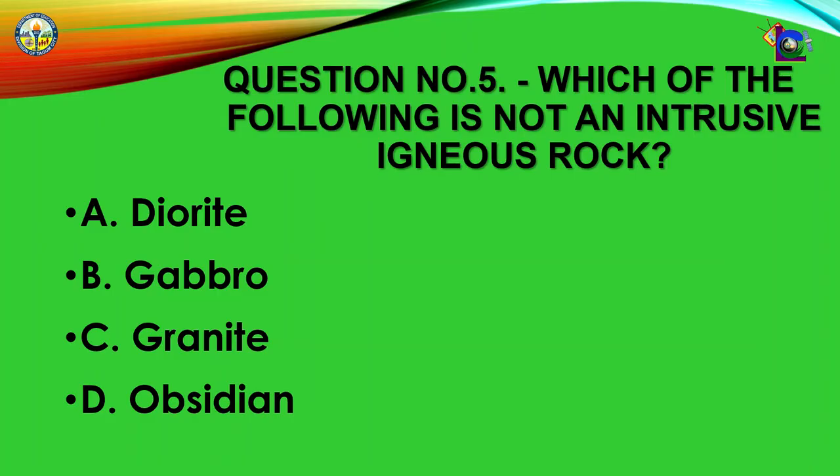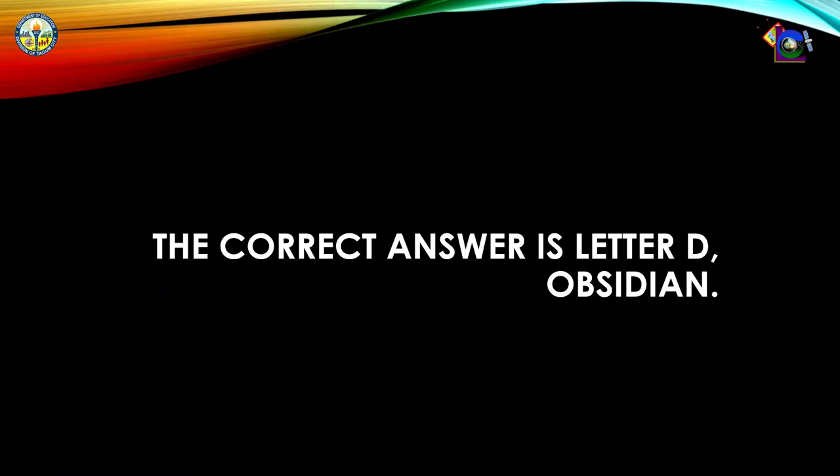Number 5: Which of the following is not an intrusive igneous rock? A. Diorite, B. Gabbro, C. Granite, D. Obsidian. The correct answer is letter D — Obsidian.